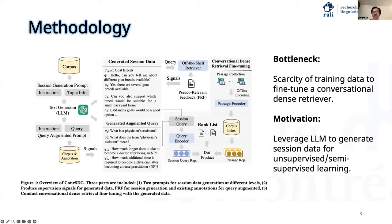We first design two prompts for dialogue-level and query-level generation. Then, we produce the supervision signals, which are derived from pseudo-relevance feedback and existing annotations for these two-level generations. Finally, we perform conversational dense retrieval fine-tuning with the generated data, corresponding to unsupervised and semi-supervised training settings.